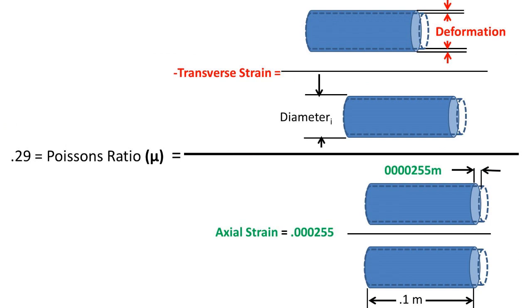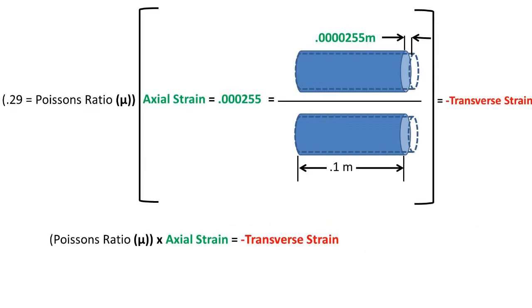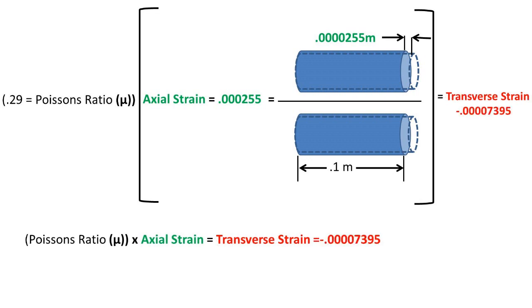We can plug in our axial strain into the Poisson ratio formula. The Poisson's ratio formula is transverse strain over axial strain. To get the transverse strain to one side of the equation, we can multiply both sides by the axial strain. We end up with a transverse strain of 0.00007395.